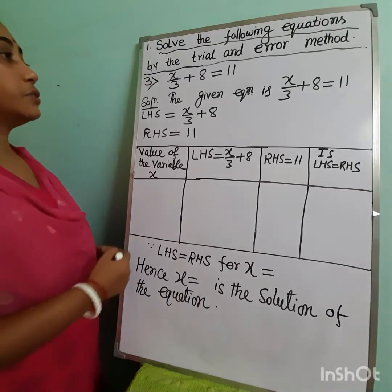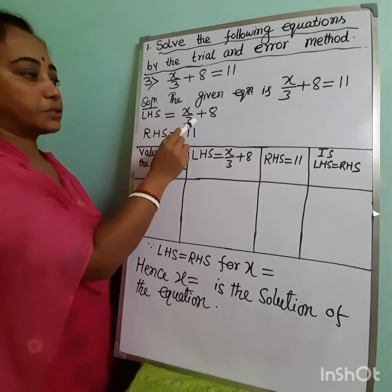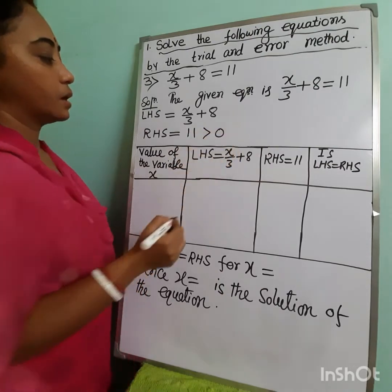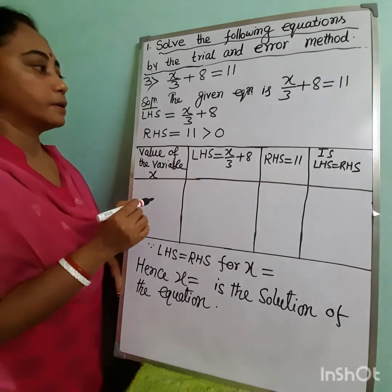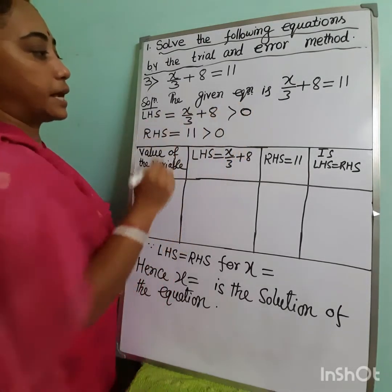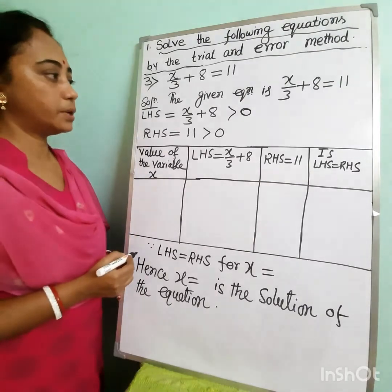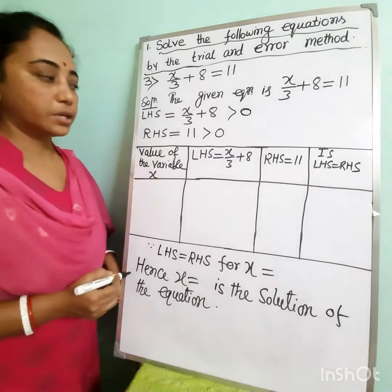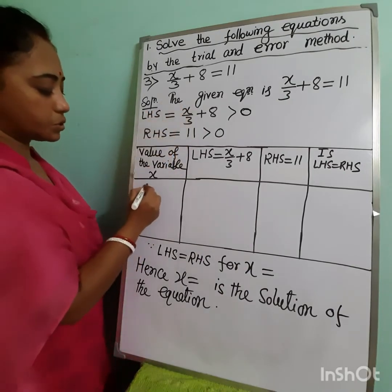Now let's see another example. The given equation is x/3 + 8 = 11. Here left hand side equals x/3 + 8 and right hand side equals 11. Since the right hand side is a natural number and 8 is a natural number, x/3 must also be a natural number, so we take values of x as multiples of 3 because the denominator is 3.